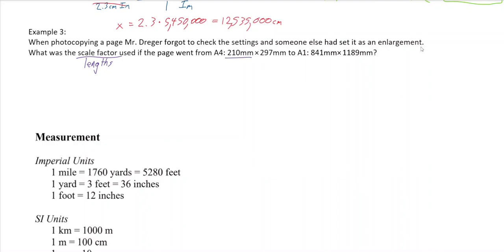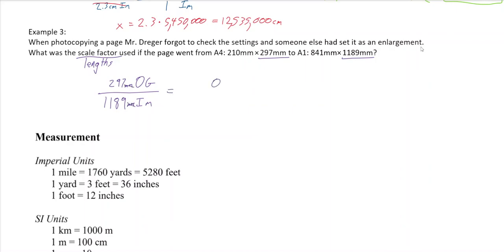Going from one measurement to another — let's check the values. The original is 297 millimeters and the image is 1,189 millimeters. Setting up the fraction with millimeters on both sides, the units cancel and we're left with a ratio of OG over image.